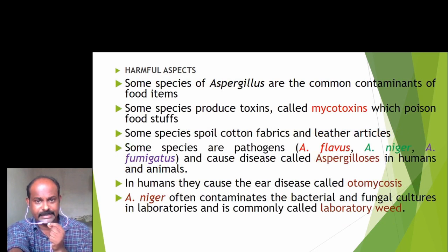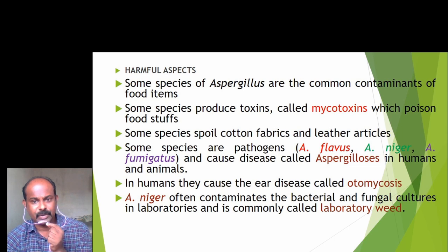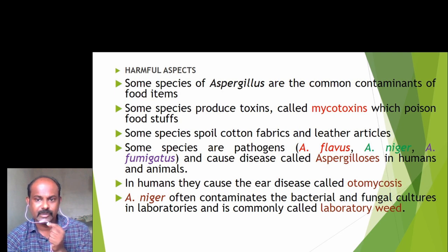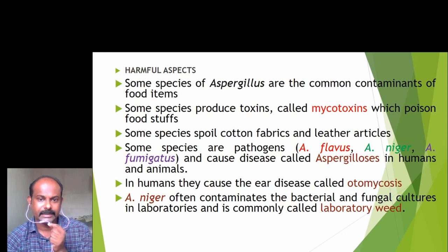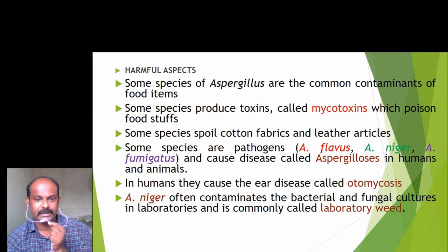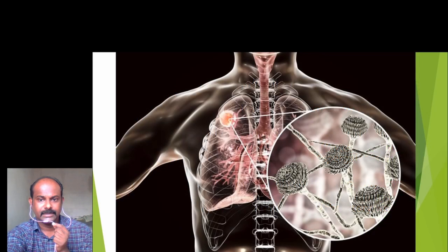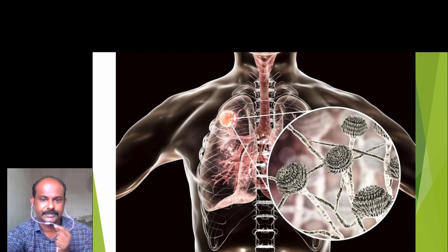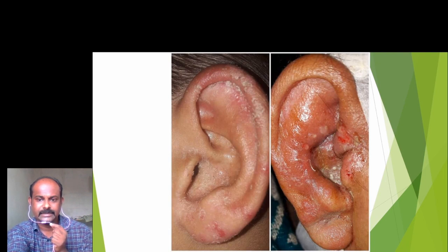Some species of Aspergillus are common contaminants of food items. Some species produce toxins called mycotoxins which poison foodstuffs. Some species spoil cotton fabrics and leather articles. Some are pathogens which can cause diseases called aspergillosis in humans and animals. Species like Aspergillus flavus, Aspergillus niger, and Aspergillus fumigatus are capable of causing aspergillosis. In humans, they also cause a disease of the ear called otomycosis. Aspergillus niger often contaminates bacterial and fungal cultures in laboratories and is commonly called a laboratory weed. This figure shows the infection of lungs by Aspergillus called aspergillosis, and the infection of the ear called otomycosis.